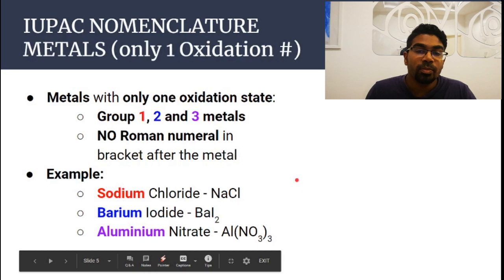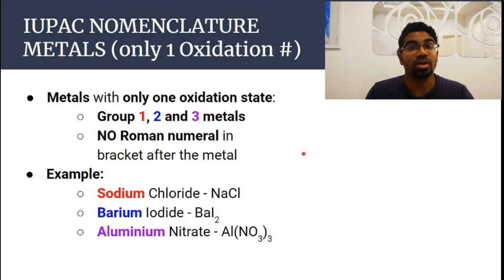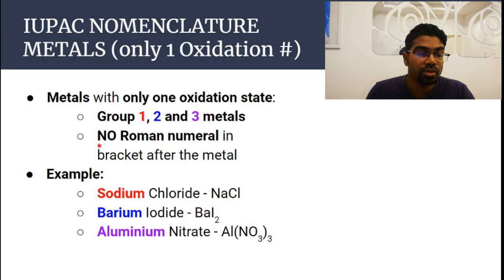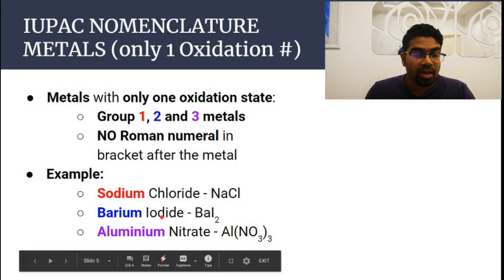Metals with only one oxidation number are very simple — we don't have to write the oxidation number in brackets because they only have one oxidation state. Metals in groups one, two, and three have only one oxidation state, so there is no need to write the Roman numerals in brackets. For example: sodium chloride — sodium is group one; barium iodide — barium is group two; aluminium nitrate — aluminium is group three. None of them require Roman numerals in brackets.